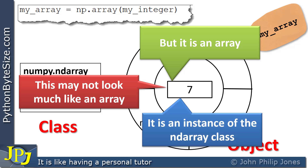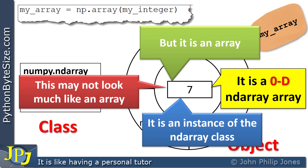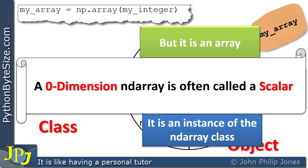It is an instance of the ndarray class, and this is what it would look like. You might ask whether this needs an index — is this the index-zero position? I'll leave that for you to consider. You can print out the zero index position of this array and see what happens. What we can say is that this is an example of a zero dimension ndarray with just one value — there are no other elements. A zero dimension ndarray is often called a scalar. They are used to scale up or scale down other array values using mathematical operations, which we'll look at in due course.